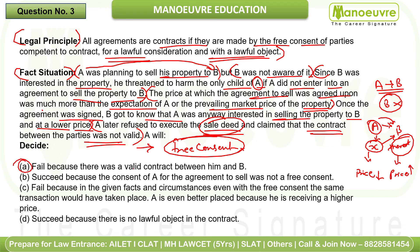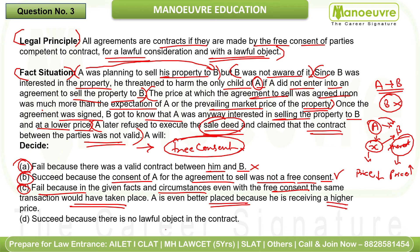Option A says A will fail because there was a valid contract — incorrect, since consent was obtained by threat. Option B says A will succeed because consent was not free — this is the correct answer. Option C says A will fail because even without free consent the same transaction would have happened — this is a moral argument, not a legal principle. Option D says A will succeed because there is no lawful object — incorrect. Option B is correct.